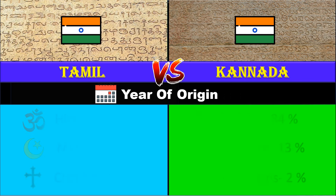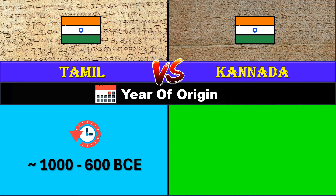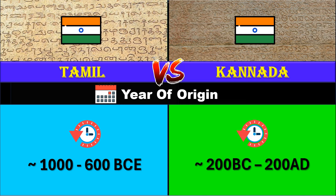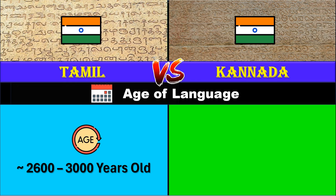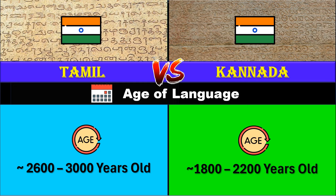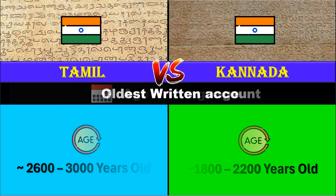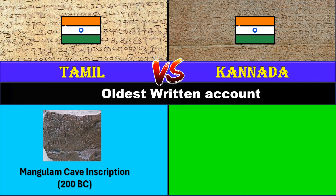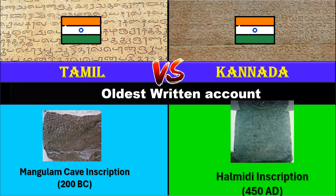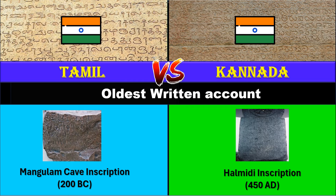Year of origin: Tamil between 1000 BC and 600 BC, Kannada between 200 BC and 200 AD. Age of language: Tamil is around 2600 to 3000 years old, Kannada is around 1800 to 2200 years old. Oldest written account: Tamil's is the Mangulum cave inscription dated to 200 BC, Kannada's is the Halmiti inscription dated to 450 AD.